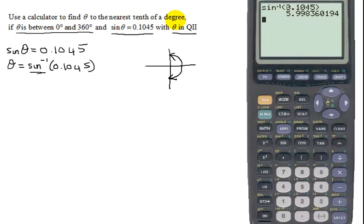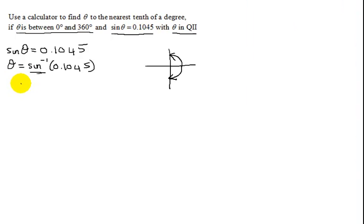But remember, I want it to the nearest tenth of a degree, so that means I need it to this position here. This 9 is going to round that 9 up to a 10, which is going to round the 5 up to a 6. So, theta is going to equal 6.0 degrees.